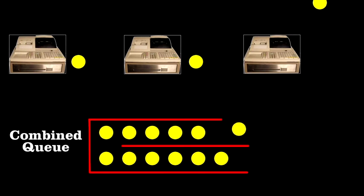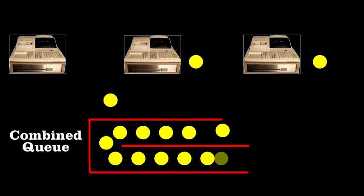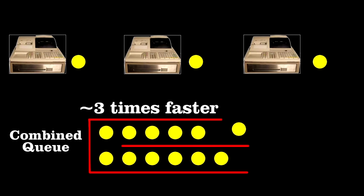Instead, they should make a single line feed multiple cashiers. For three cashiers, it's about three times faster than having a line for each cashier.